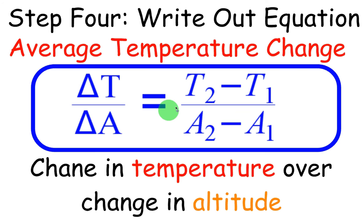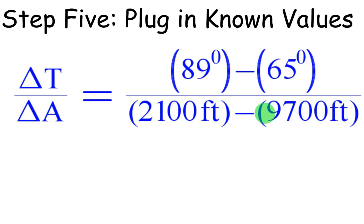Here's our equation. You can notice all these average rate of change equations are the same, except for the variables. It's just like Y2 minus Y1 over X2 minus X1. In this case, it's change in temperature over change in altitude.